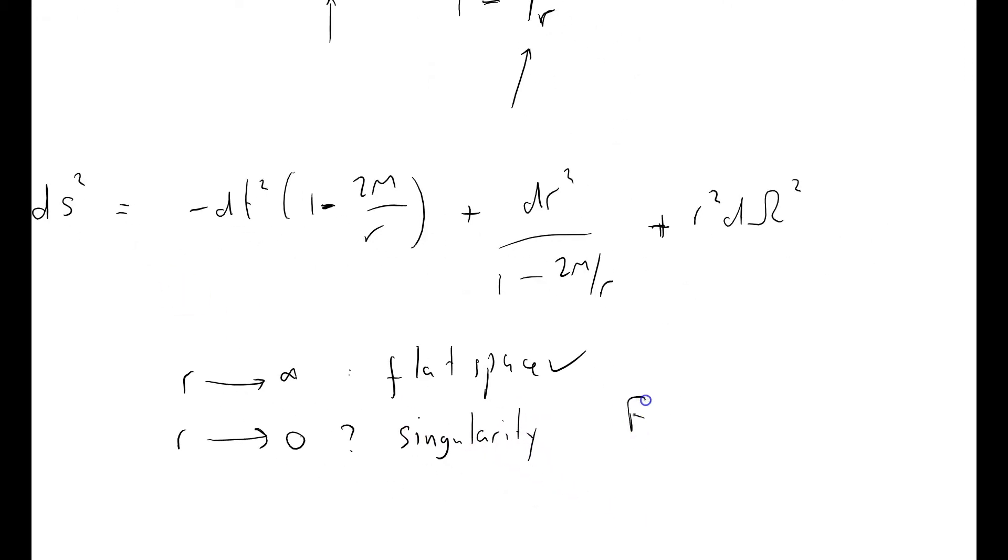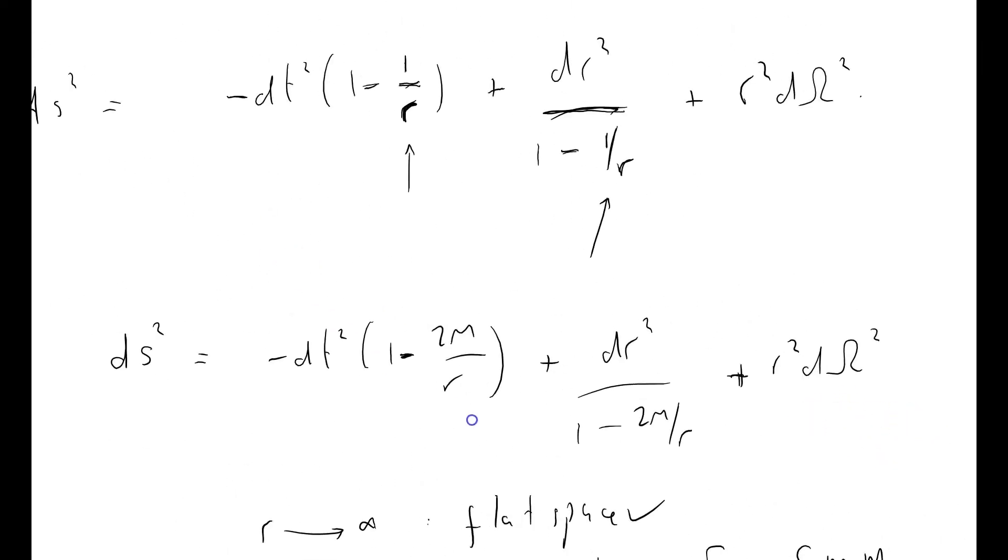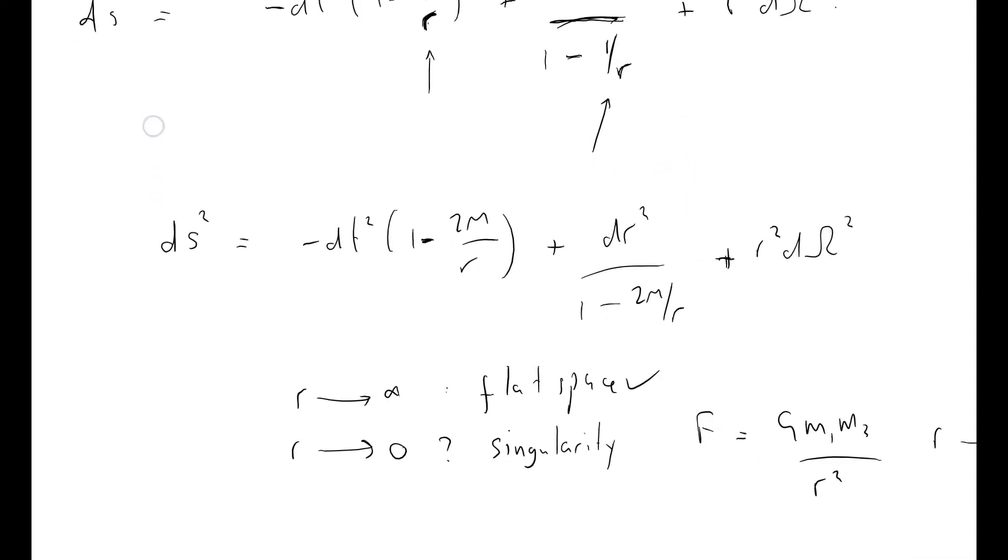But for the moment I just want to observe that F equals gm1m2 over r squared, the Newtonian physics law, this blows up as r approaches infinity, and so it's not entirely unexpected that as r approaches zero, we've got infinities. Now of course, the interesting thing here is what happens when r approaches 1?